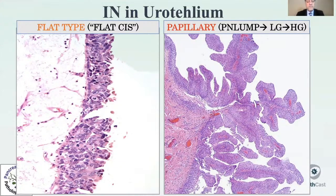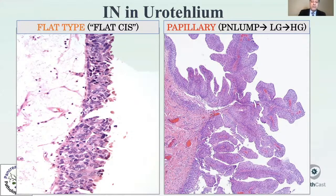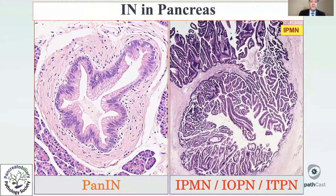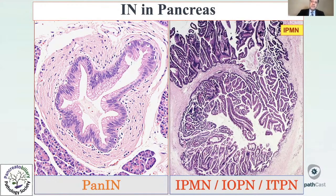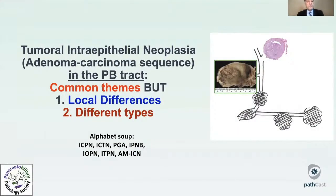In the urothelium, flat-type CIS versus papillary neoplasms ranging from papilloma to low-grade to high-grade are very distinct entities. In the pancreas and biliary tract, these two types are becoming increasingly recognized and characterized. PanIN represents the flat or microscopic incidental type of dysplasia — not tumor-forming — whereas IPMNs and IRPNs are the ones that form tumors by themselves: tumoral types of intraepithelial neoplasia.